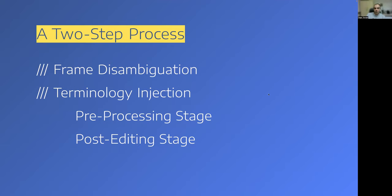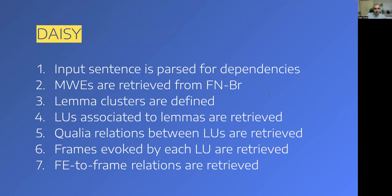There are two implementations of this methodology. The frame disambiguation process is carried out by DAISY, an algorithm developed by FrameNet Brazil, standing for Disambiguation Algorithm for Inferring the Semantics of Y. What DAISY does is first take an input sentence, parse it for dependencies using an external dependency parser — in this implementation we used the UDPipe parser.